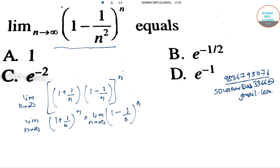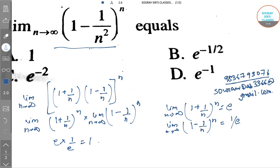Now, limit n→∞ (1 + 1/n)^n equals e, and limit n→∞ (1 - 1/n)^n equals 1/e. Substituting these values, we get e × 1/e = 1. Hence option A is correct.